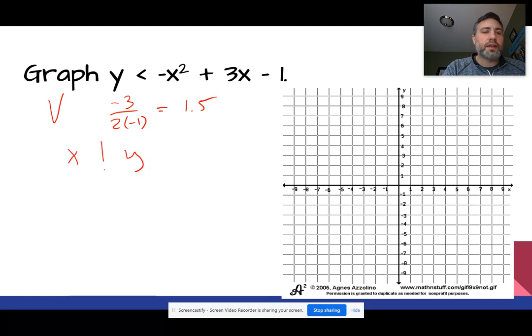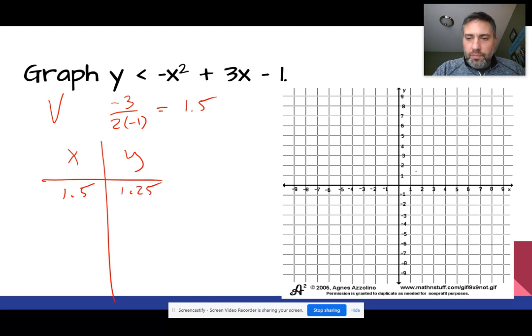So go ahead and make a table. We'll put a 1.5 right there. We're going to then substitute that back in for X. Don't worry about the inequality sign at this point. Just substitute it back in. Try to figure out what Y is going to be when you substitute that in. In this case, I already did that, so it's 1.25. So let's go ahead and start to graph that. So 1.5, 1.25 would be about right there.